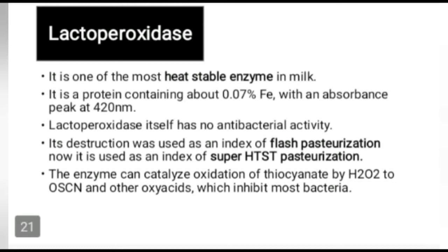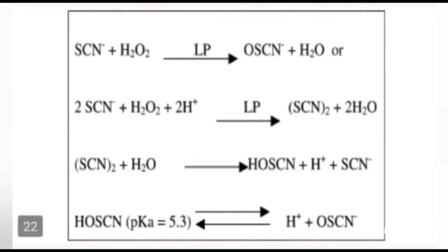Peroxidase is one of the most heat-stable enzymes in milk. It is present in cow milk but absent in human milk. The lacto-peroxidase system is a method of preservation for raw milk, but itself has no antibacterial activity. It is a protein containing about 0.07% iron with an absorbance peak at 420 nanometers. Its destruction was used as an index of flash pasteurization, also called super high temperature short time pasteurization — a method of heat pasteurization of beverages like food and vegetable juice and some dairy products such as milk. The lacto-peroxidase enzyme catalyzes oxidation of thiocyanate by hydrogen peroxide to hypothiocyanate and other oxy-acids, which inhibit most bacteria.